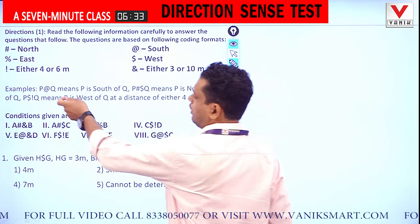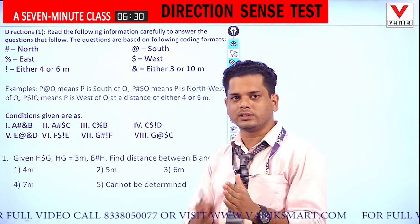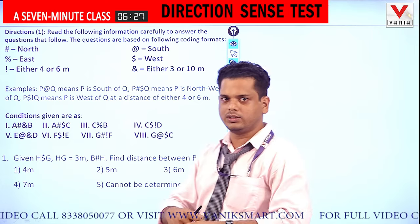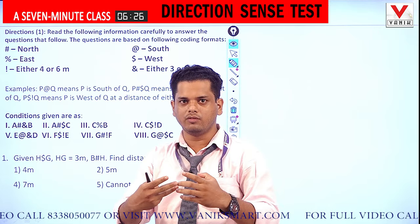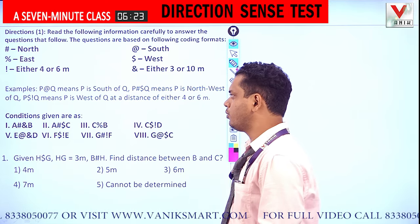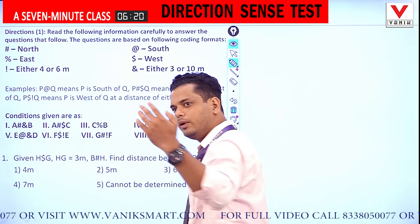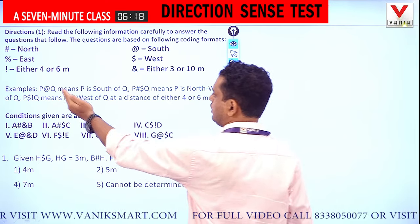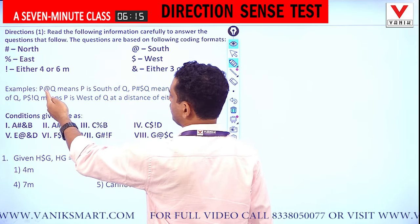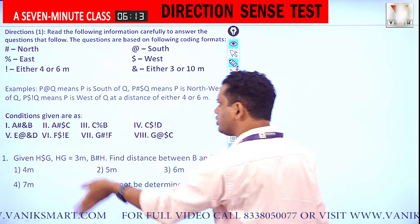Here, 'p @ q' means you have to detect whether the direction is given from left to right, from right to left, or mixed — there are three various ways to express any coded format for direction. Here, everything is given from left to right. So 'p @ q' means p is south of q.